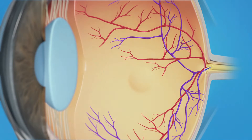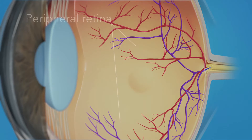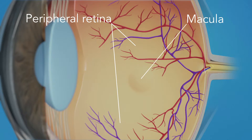The retina has two areas: the peripheral retina, which gives us our side or wide-angle vision, and the macula, the small area at the center of the retina. The macula gives us our pinpoint vision, allowing us to see detail clearly.